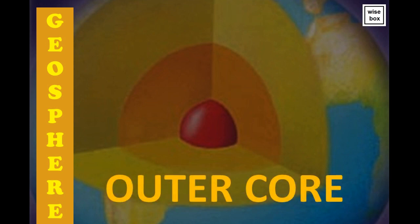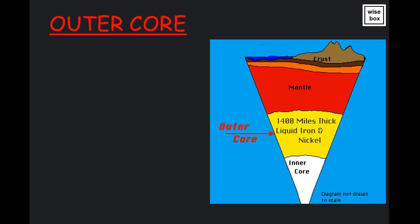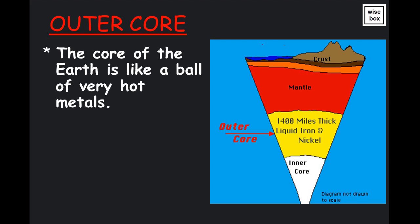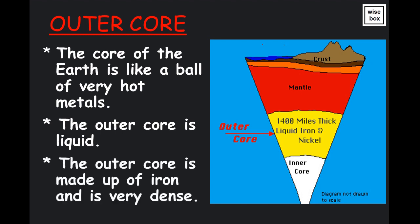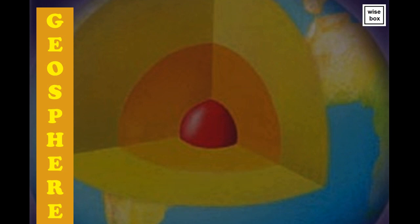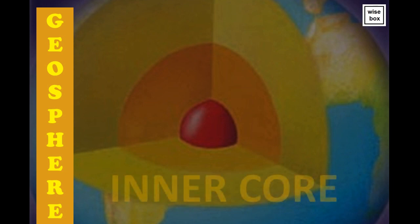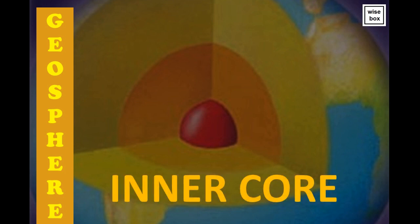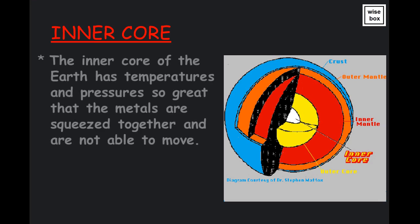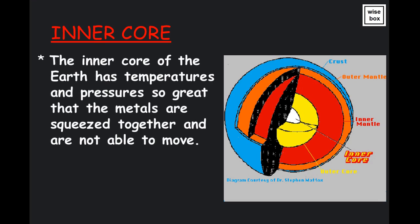The outer core. The core of the Earth is like a ball of very hot metals. The outer core is liquid, made up of iron and is very dense. The inner core of the Earth has temperatures and pressures so great that the metals are squeezed together and are not able to move. The inner core is a solid.